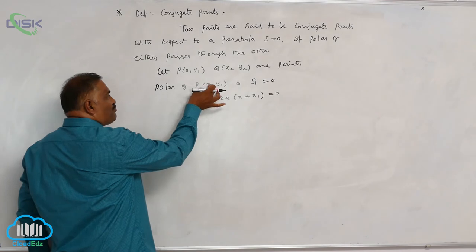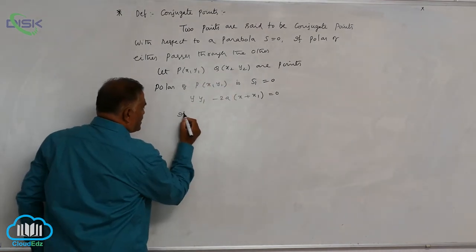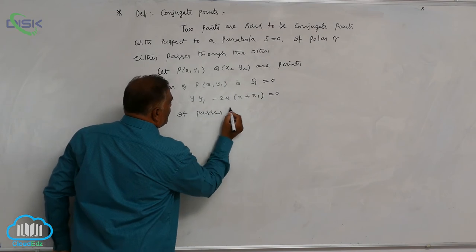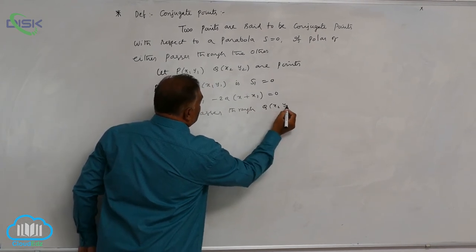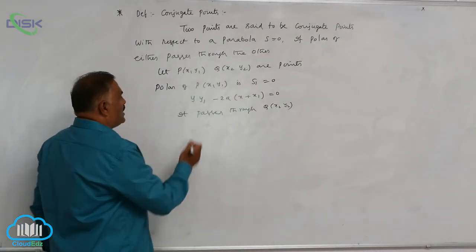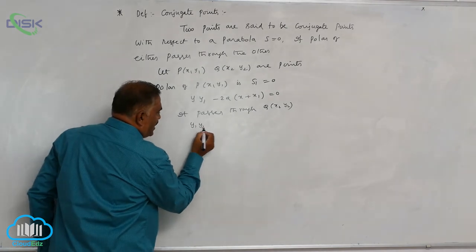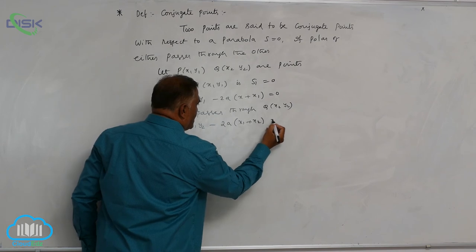Now polar of P point passes through Q. So, it passes through Q (x₂, y₂). Then wherever x and y is there, replace it by x₂, y₂. It will become y₁y₂ minus 2a into (x₁ plus x₂) is equal to 0.